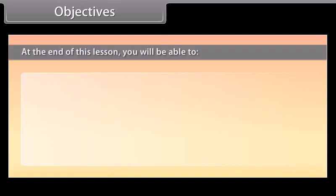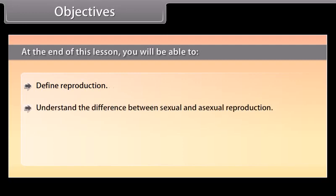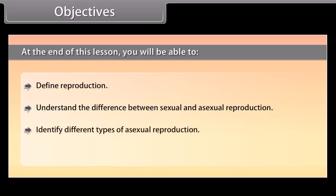At the end of this lesson, you will be able to: define reproduction; understand the difference between sexual and asexual reproduction; identify different types of asexual reproduction; and identify various events of sexual reproduction.